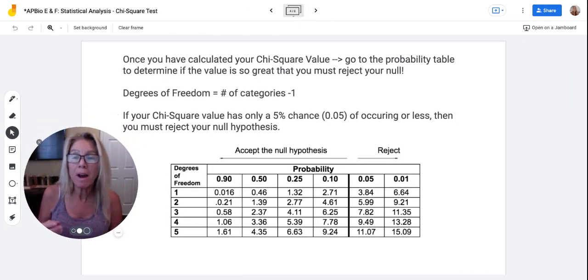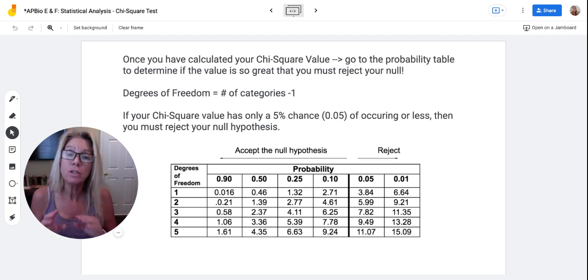Now once you have that chi-squared value, the math that we just saw in the previous slide, what you're going to do is you're going to look at this probability table. This probability table will tell you whether you should reject or accept your null hypothesis.